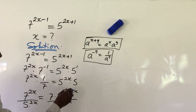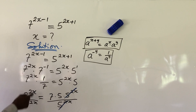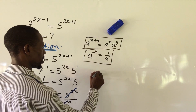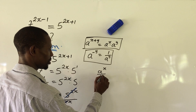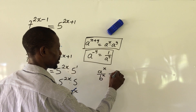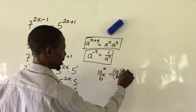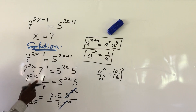On the right-hand side, we cancel out the 5 to the power of 2x. Now look at this expression we have. The powers are the same, the exponents are the same, but the bases are different. So we can rewrite this according to the law of indices, which says that a to the power of x over b to the power of x is the same thing as a over b, all to the power of x.